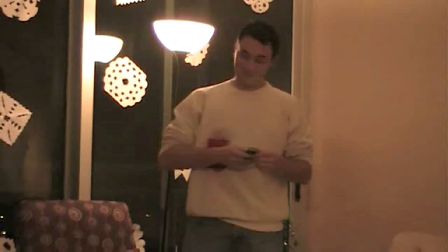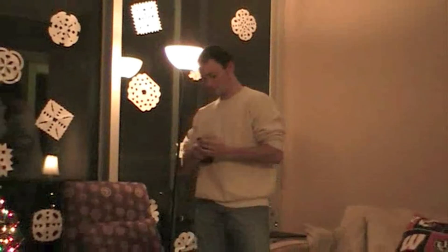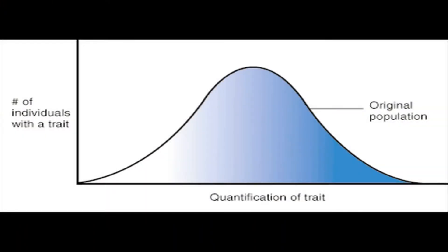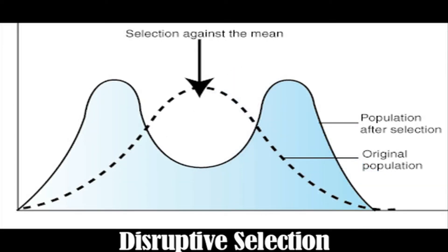This is an example of disruptive selection, in which both extreme traits are favored, and the moderate trait is at a disadvantage. This results in an increase in the frequencies of phenotypes toward both extreme traits, creating a curve resembling a double bell curve.